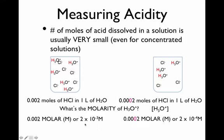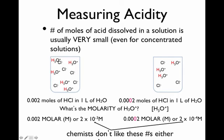You might think we're done — we can describe acid concentration using molarity. However, the chemists who came up with the currently most used method for measuring acid concentration did not like these types of numbers. They didn't like scientific notation or writing these very tiny numbers. So the person who invented the modern method tried to come up with a new approach, still using molarity in some way.